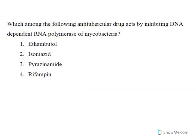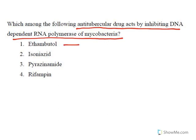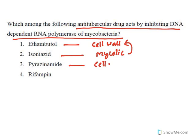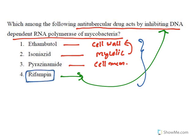Next question: 'Which anti-tubercular drug acts by inhibiting DNA-dependent RNA polymerase of mycobacteria?' Among anti-TB drugs: ethambutol acts against the cell wall; isoniazid inhibits mycolic acid synthesis (indirectly inhibiting the cell wall); pyrazinamide inhibits the cell membrane. Rifampicin specifically inhibits DNA-dependent RNA polymerase of mycobacteria — that is the correct answer.